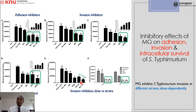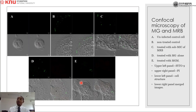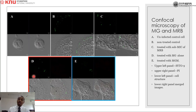To confirm our results we used confocal microscopy. Cells treated with Salmonella Typhimurium alone showed intracellular bacteria, but this was significantly reduced with methyl gallate alone. The reduction was even greater when methyl gallate was combined with sub-MIC marbofloxacin. We can also see a greater number of dead cells produced by the combination of methyl gallate and marbofloxacin.